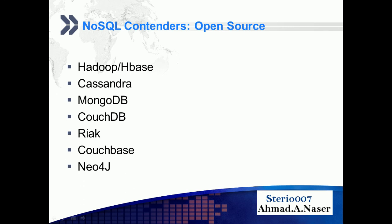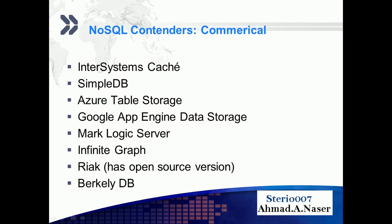These are the NoSQL vendors — open-source options include Cassandra, MongoDB, and Neo4j. For NewSQL commercial databases there are InterSystems, DynamoDB, Azure Table Storage, Google App Engine Datastore, MarkLogic Server, InfinityGraph, and React, which also has an open-source version. We also have Berkeley DB.